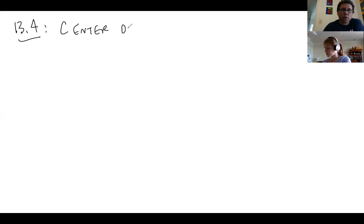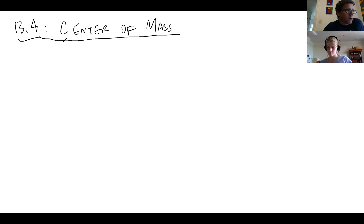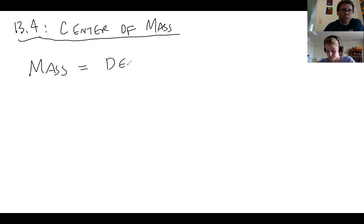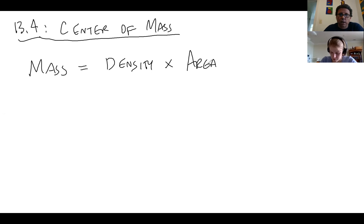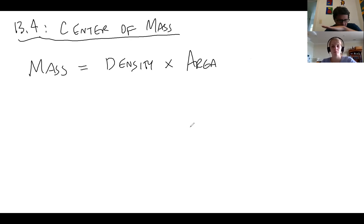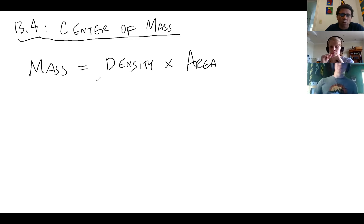Before we can do center of mass, we need to talk about mass. The basic formula is: mass equals density times area. This makes the most sense in 3D, but we need it in 2D as well. In 2D, mass equals density times area, and we're thinking of this as a thin plate — technically called a lamina.